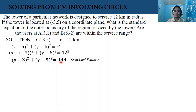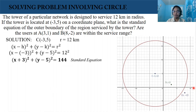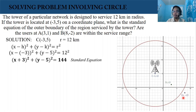If we're going to use a graphing tool, we're going to obtain this graph where the tower is located at the center, or negative 3, 5. As we can see, we have two other points: point A at (3, 1) and point B at (8, negative 2).